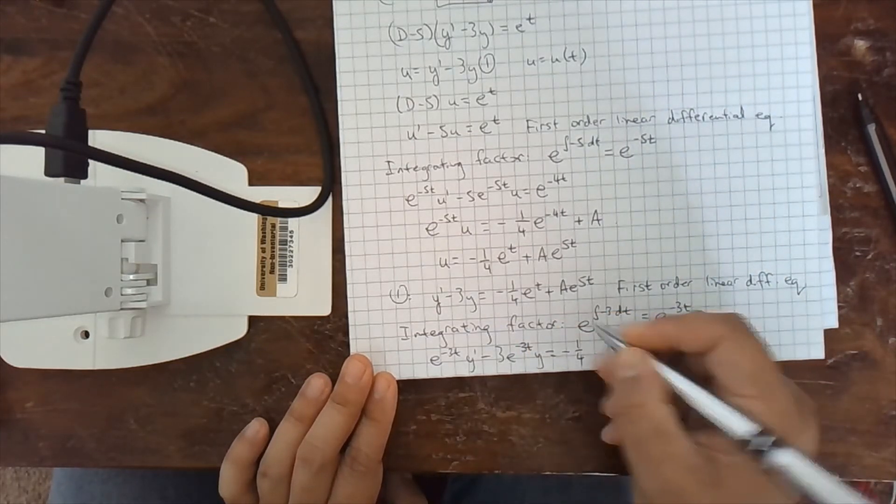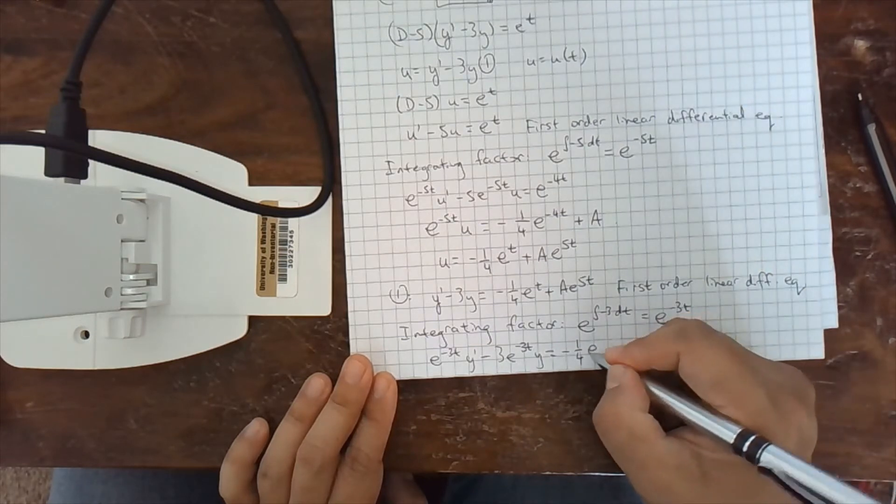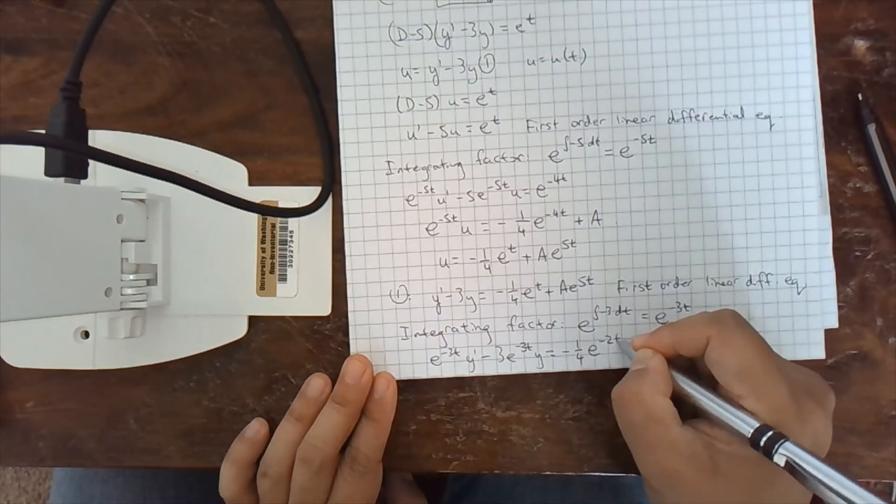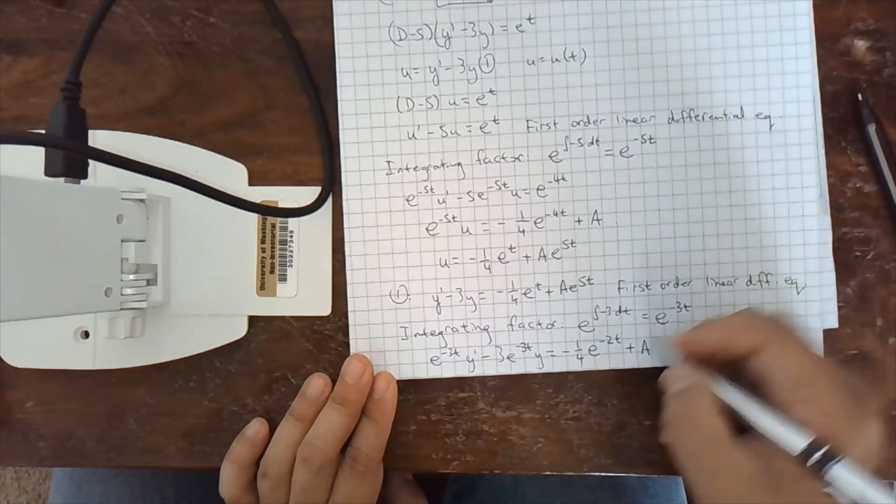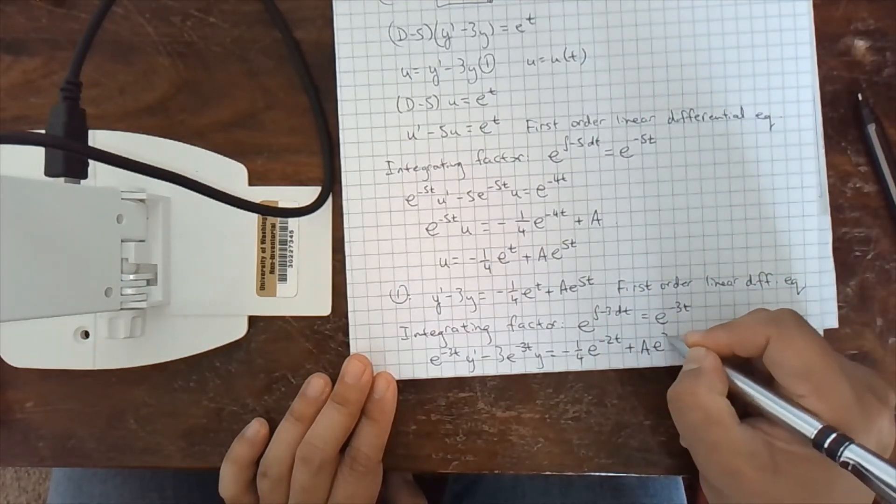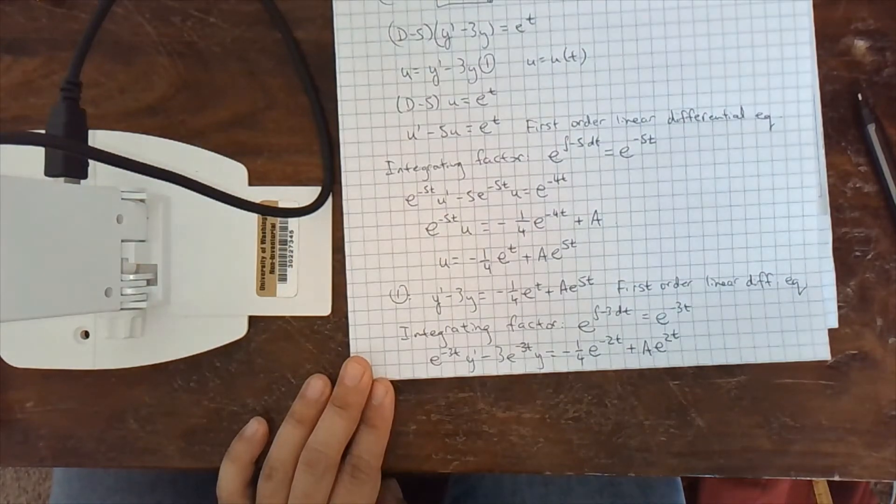Okay, this is minus 1 fourth. e to the t times e to the minus 3t is a total of e to the minus 2t plus a e to the 5t times e to the minus 3t is e to the positive 2t. That's cool.